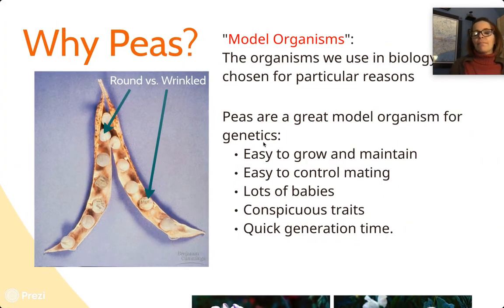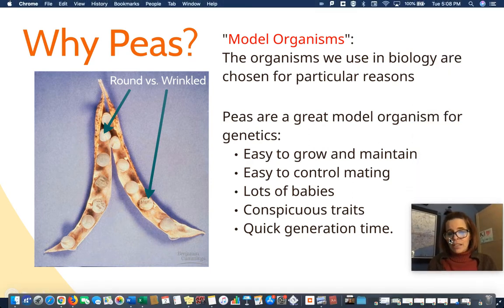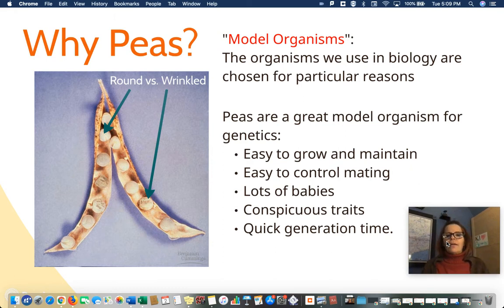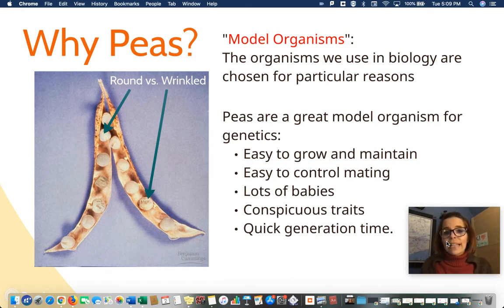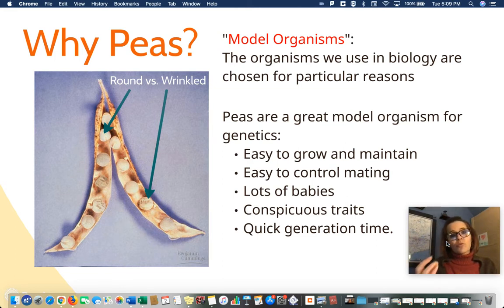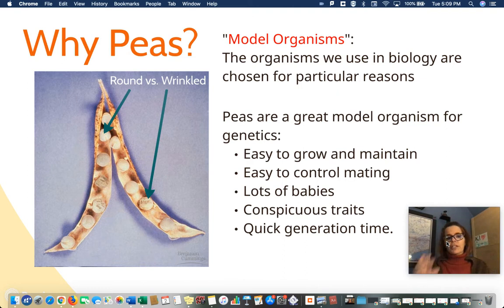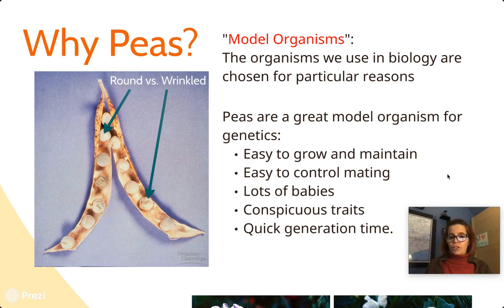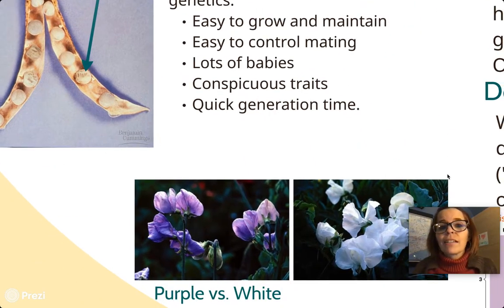In biology we have things called model organisms, and peas are a fabulous organism that Mendel happened to work with. Model organisms are organisms that reproduce often, are super easy to grow, and have a minimal number of traits we can see really clearly — lots of babies, that kind of thing. Peas worked out really well for Mendel. He was able to reproduce them quickly and look at flower color, what the peas looked like, and so it was a very good organism for learning genetics.